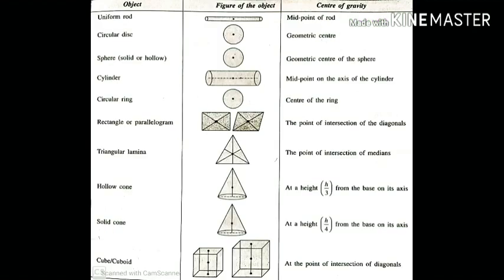Let us consider some regular shaped objects having uniform density. Let us consider the position of center of gravity of these regular shaped bodies. A uniform rod, midpoint of the rod. Circular disc, geometric center. Sphere, geometric center of the sphere. Cylinder, midpoint on the axis of the cylinder. Circular ring, center of the ring. Rectangular parallelogram, the point of intersection of the diagonals. Triangular lamina, the point of intersection of medians. Hollow cone at a height h by 3 from the base on its axis. Solid cone at a height h by 4 from the base on its axis. Cube or cuboid at the point of intersection of diagonals. Please remember these examples of the case of some regular shaped objects. Question can be asked, write an example of some bodies where its center of gravity lies inside the body.